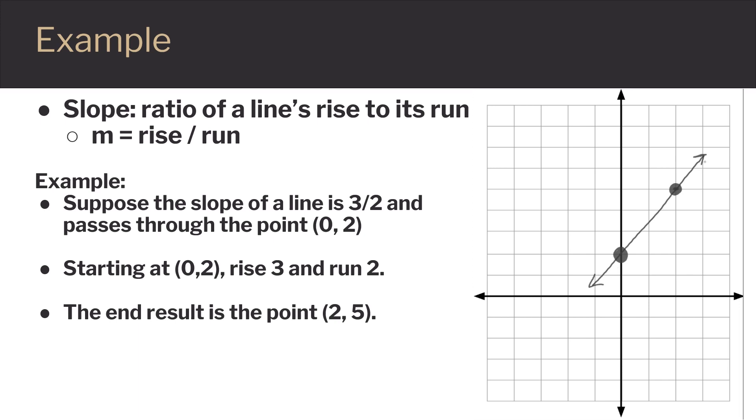If you want, you can always double check and recount to make sure you plotted correctly. We have a rise of 1, 2, 3 and a run of 1, 2. So we are correct.